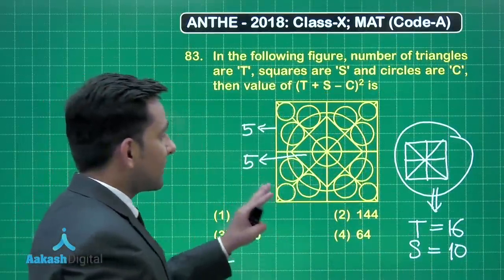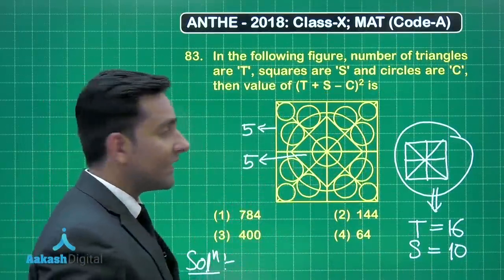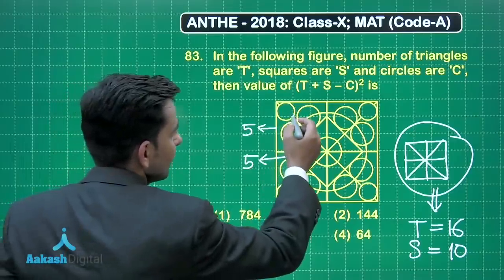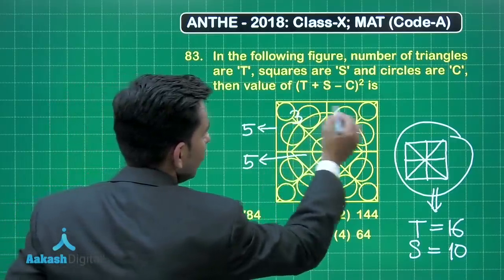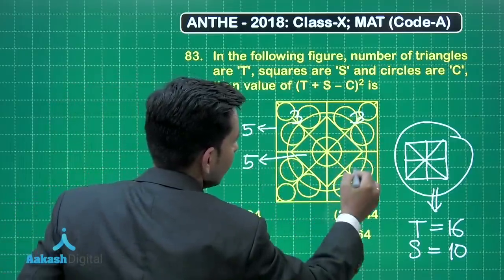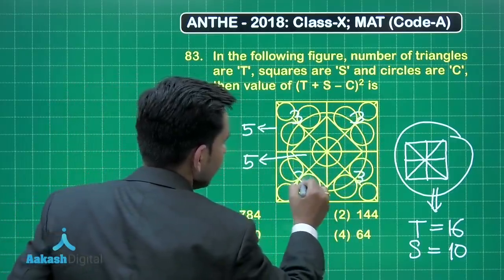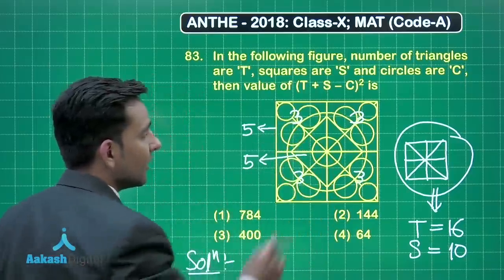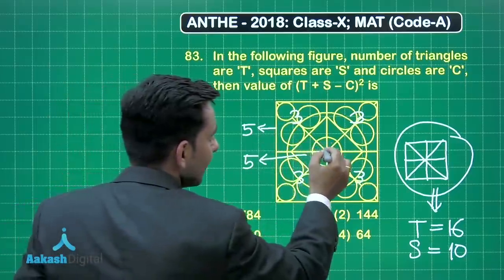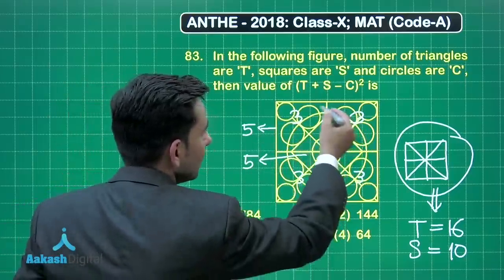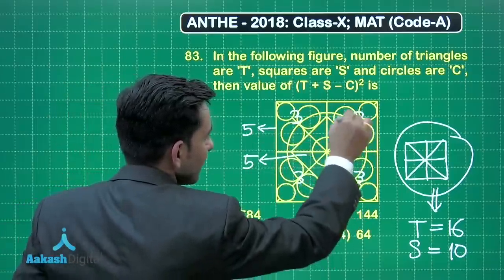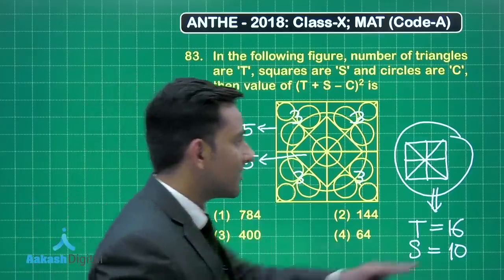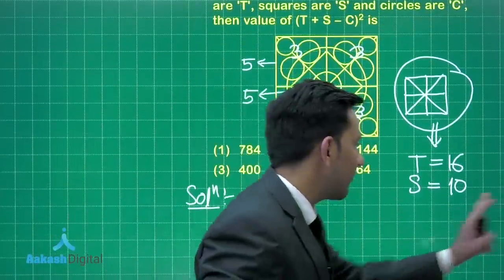Now friends, let's count the number of circles, which is very easy. You can simply count the number of circles. Here we have 3, 3, 3, 3 — that means we are getting 12 circles. If you consider the innermost and the largest circle, we have a total number of 14 circles in the given figure.